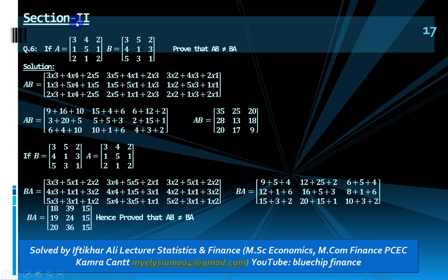Now Section 2. Matrix A is [3 4 2; 1 5 1; 2 1 2] and matrix B is [3 5 2; 4 1 3; 5 3 1]. Prove that AB ≠ BA. For AB, multiply first row by first, second, and third columns, then replace with second row multiplied by each column, and finally third row by each column.